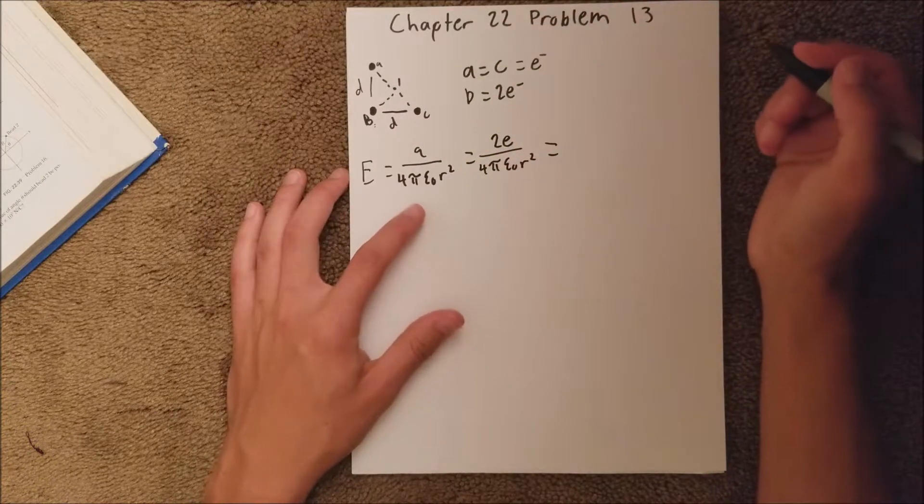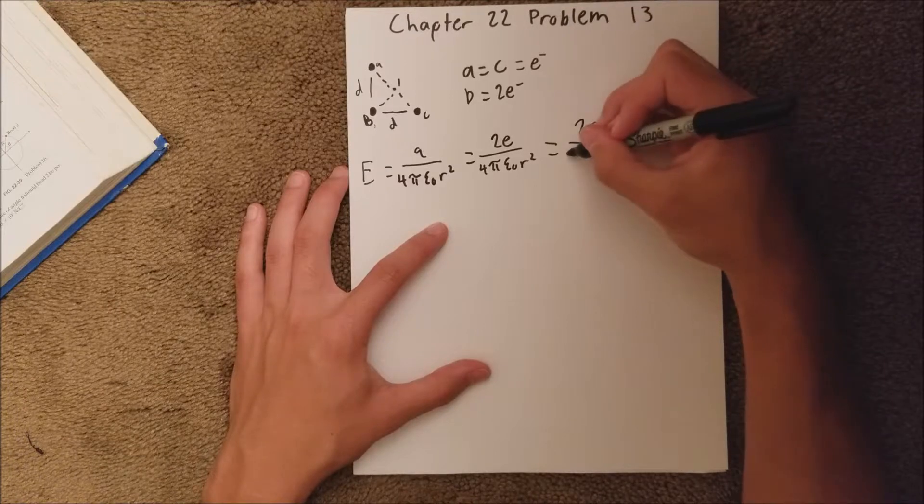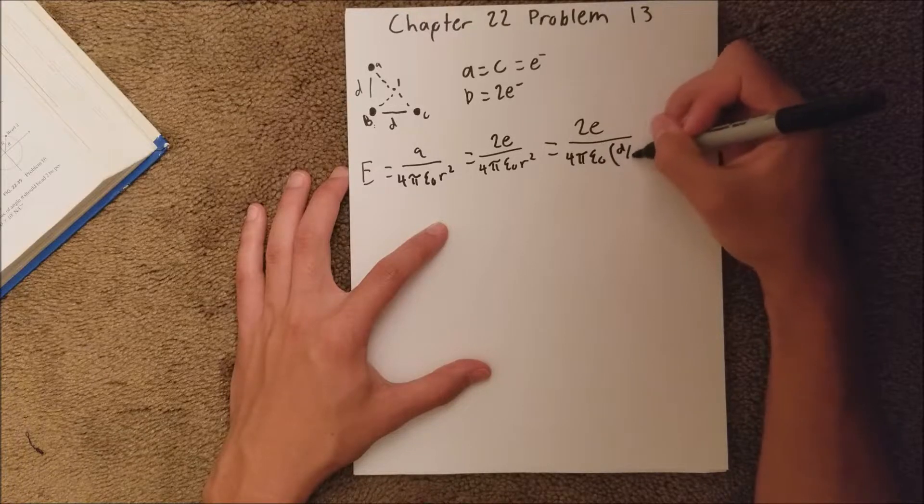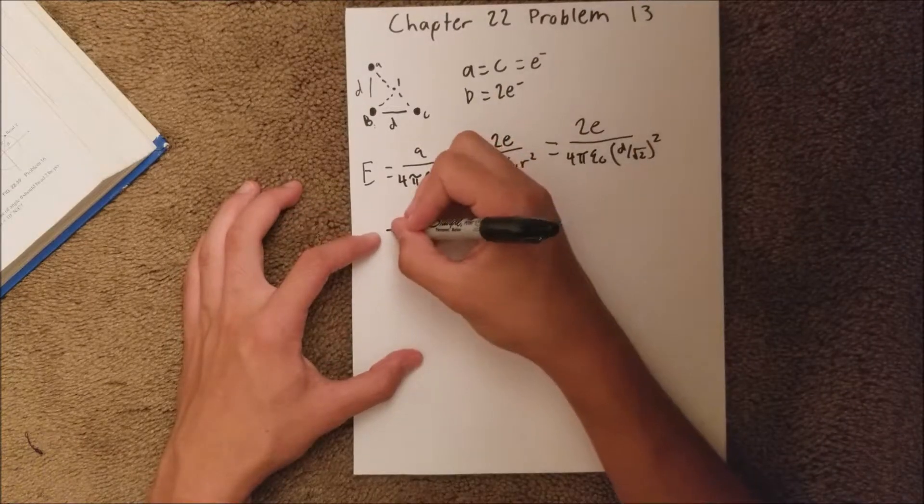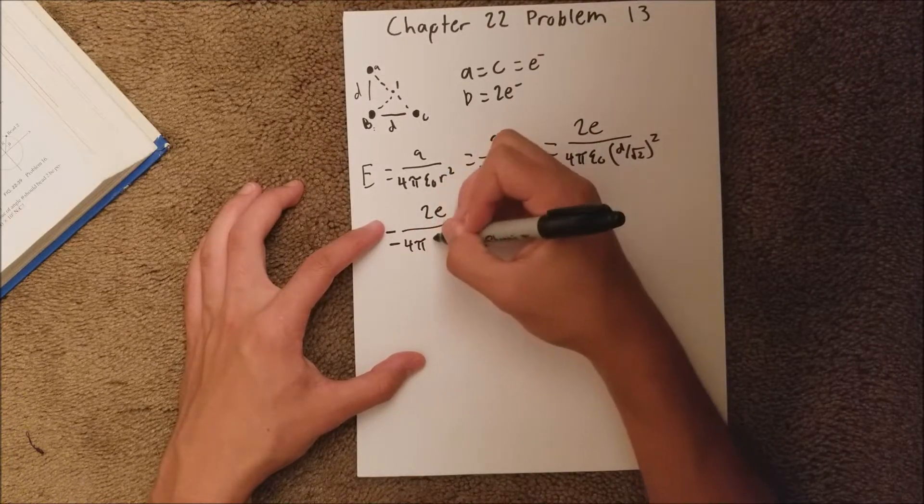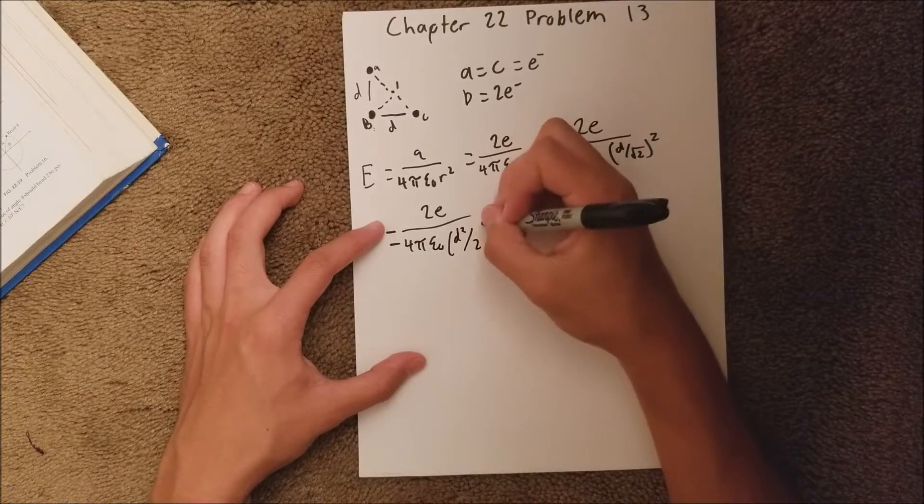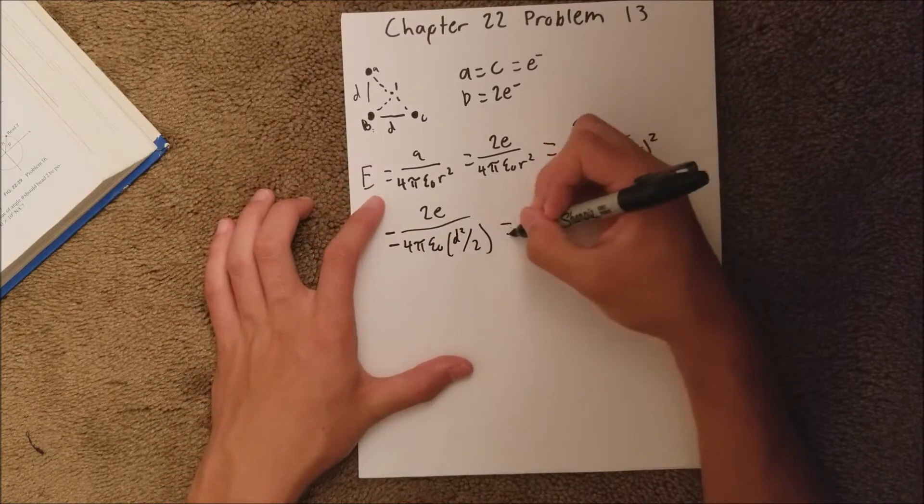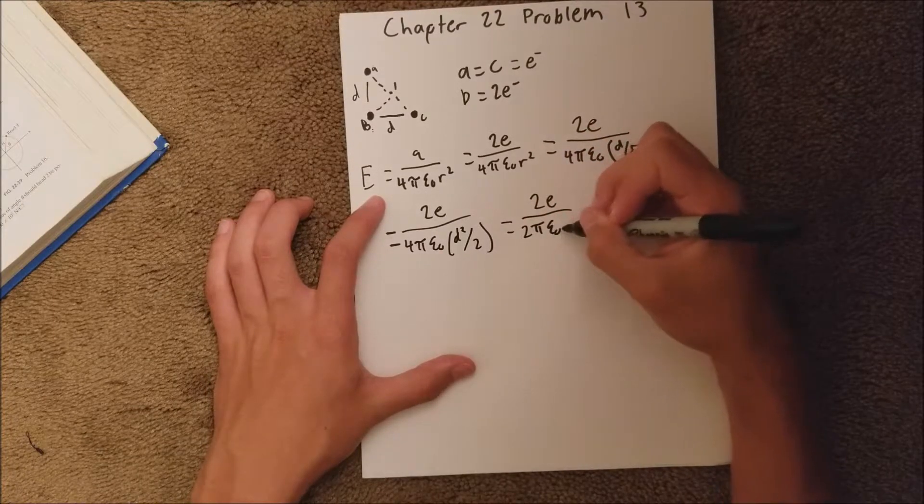is going to be distance over root 2. So this is going to equal 2E over 4 pi epsilon sub 0, and then D over root 2, that squared. And so that's going to equal 2E over 4 pi epsilon sub 0, D squared over 2. And then that'll actually cancel out with this 4 here, and you'll be left with 2E over 2 pi epsilon sub 0, D squared.